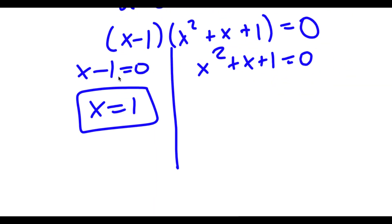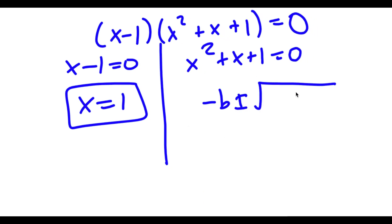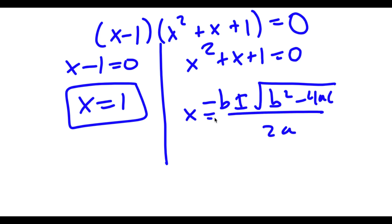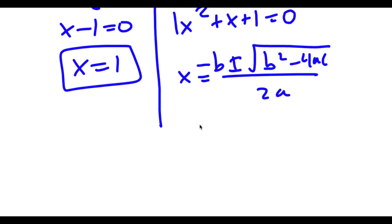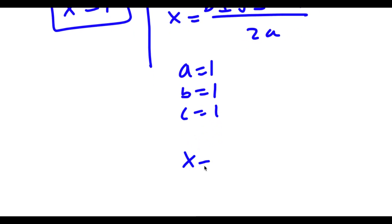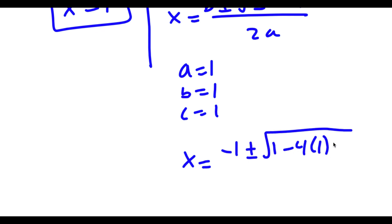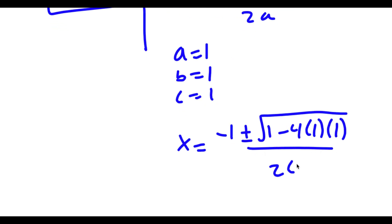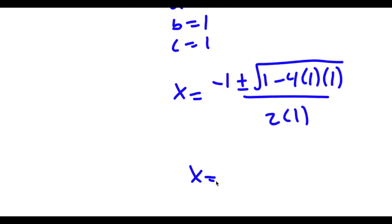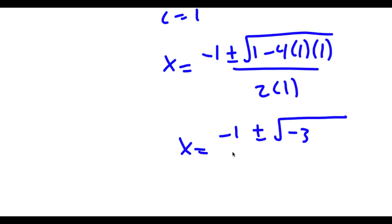And for x² plus x plus 1 equals 0, we can use the quadratic formula, which is negative b plus or minus the square root of b² minus 4ac all over 2a. So in this case, a is 1, b is 1, c is 1. So we get x is equal to negative 1 plus or minus the square root of 1 minus 4 times 1 times 1, all over 2 times 1.